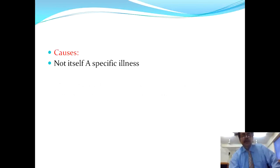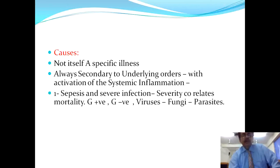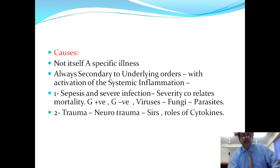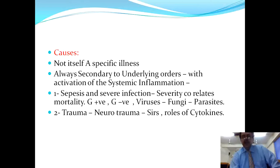There are various causes of DIC. It is not itself a specific illness but results from variable causes, including activation of the system as in sepsis and severe infection, where severity correlates with mortality. Gram-positive or gram-negative organisms may be responsible. Similarly viruses, fungi, and parasites may be implicated in systemic inflammation leading to DIC. It may also occur due to trauma, neurotrauma, and SIRS, in which cytokines play a major role.